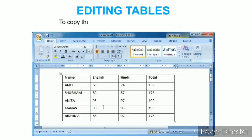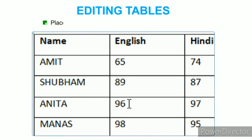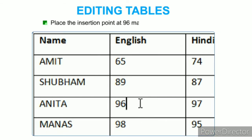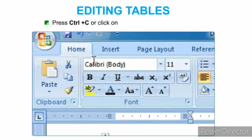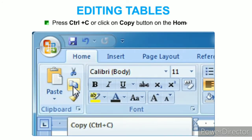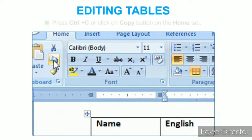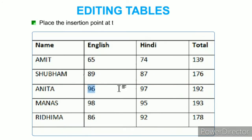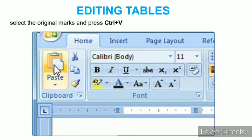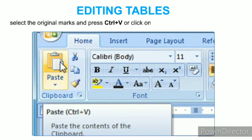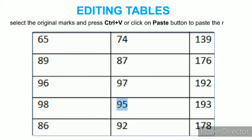To copy cell contents, place the insertion point at the 96 marks under the English field and press Ctrl+C or click the Copy button on the Home tab. Then place the insertion point at the cell under Hindi marks of Manas, select the original marks, and press Ctrl+V or click Paste to paste the marks.